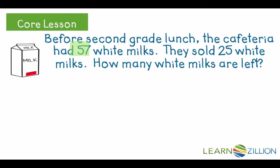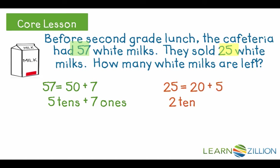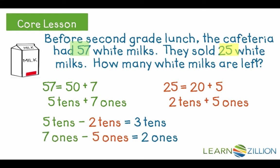They started with 57, which is the same as 50 plus 7, or 5 tens and 7 ones. They sold 25, which is the same as 20 plus 5, or 2 tens and 5 ones. Because the milks were sold, they went away, this is a subtraction situation. 5 tens minus 2 tens is 3 tens, and 7 ones minus 5 ones is 2 ones. There were 32 milks left.